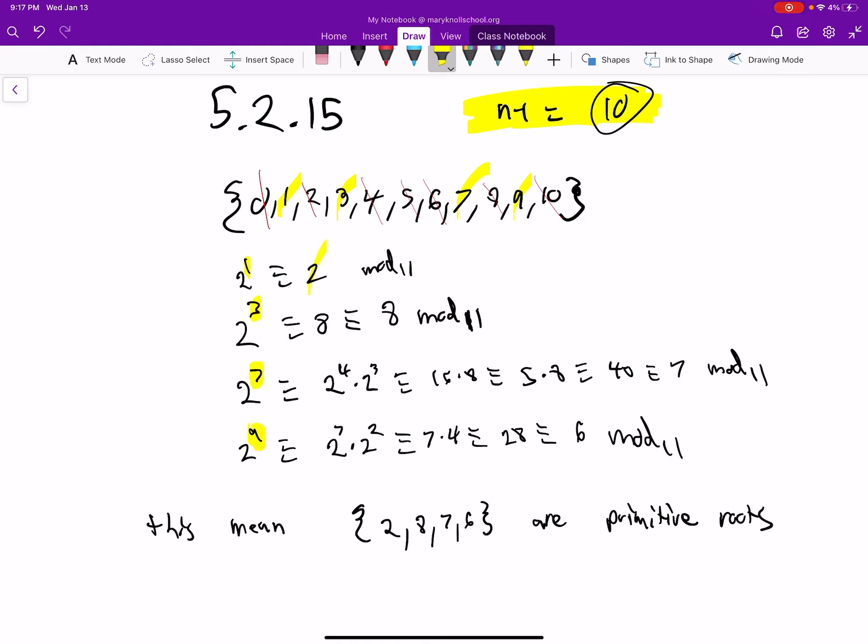And so you end up with 2, 8, 7, and 6. And that means that those are the primitive roots.